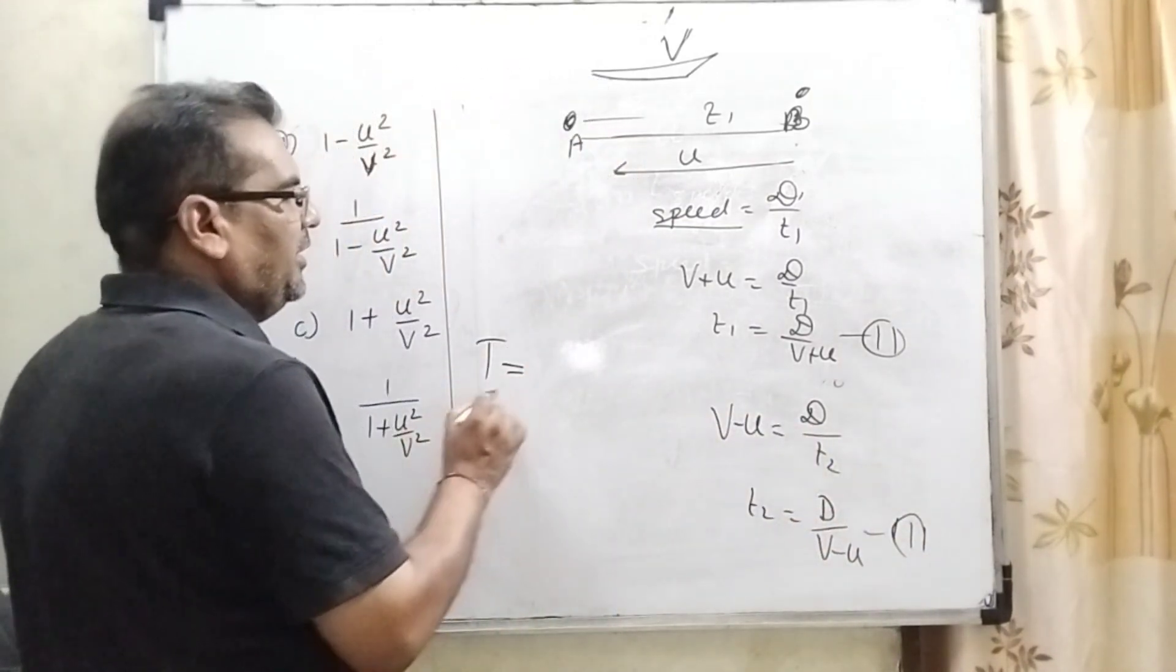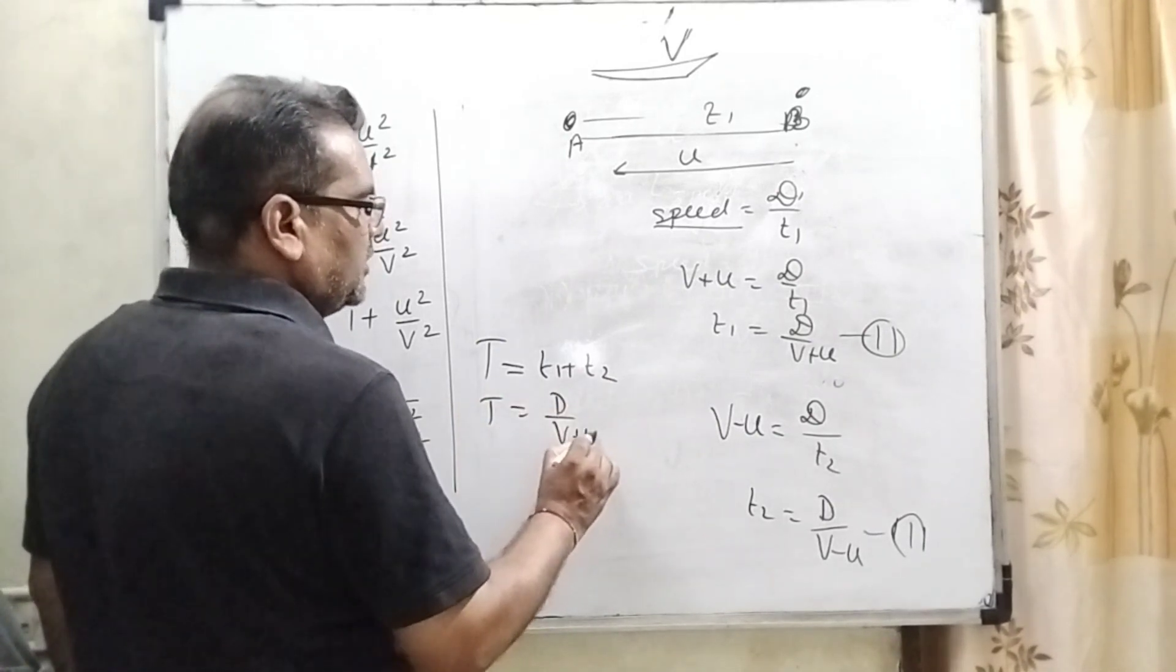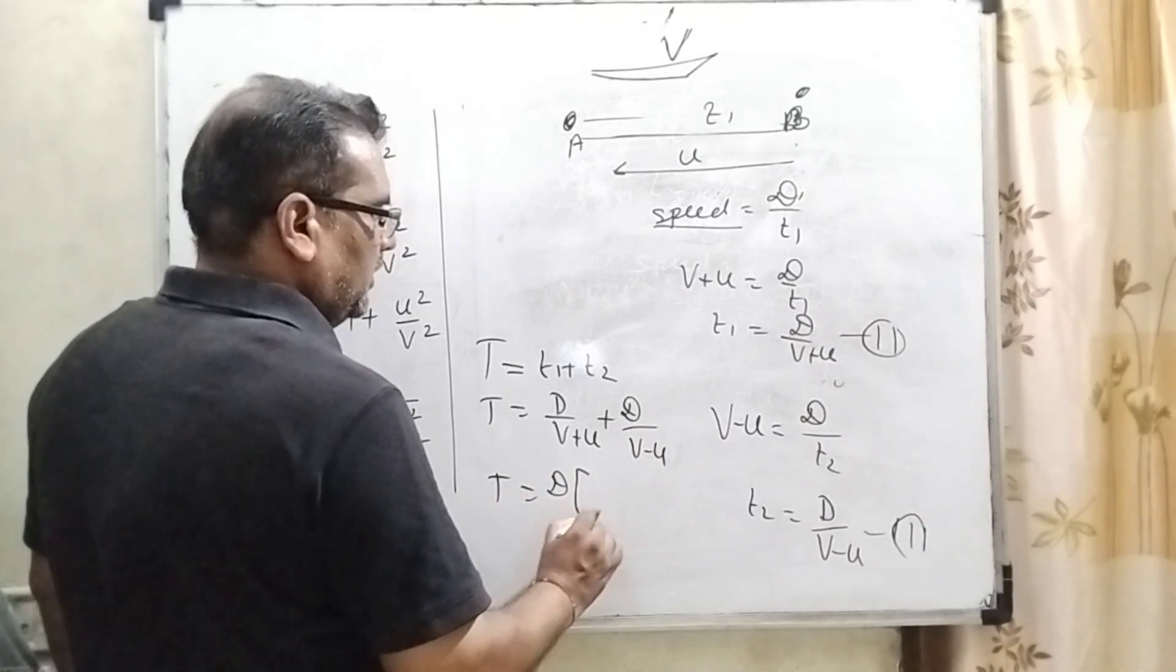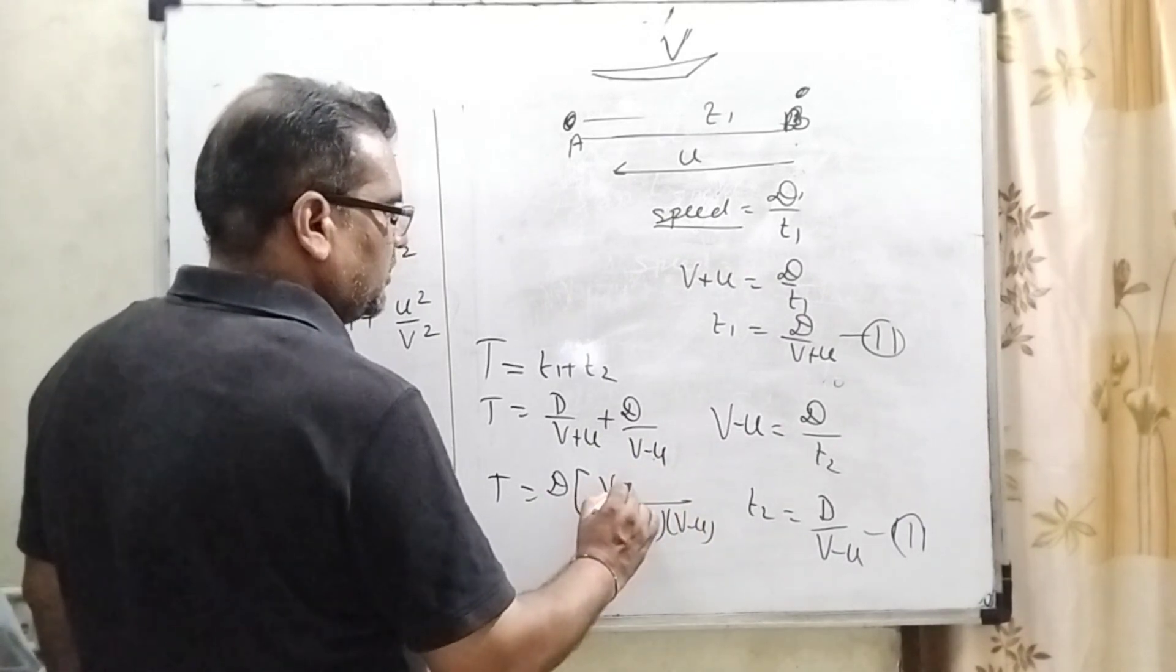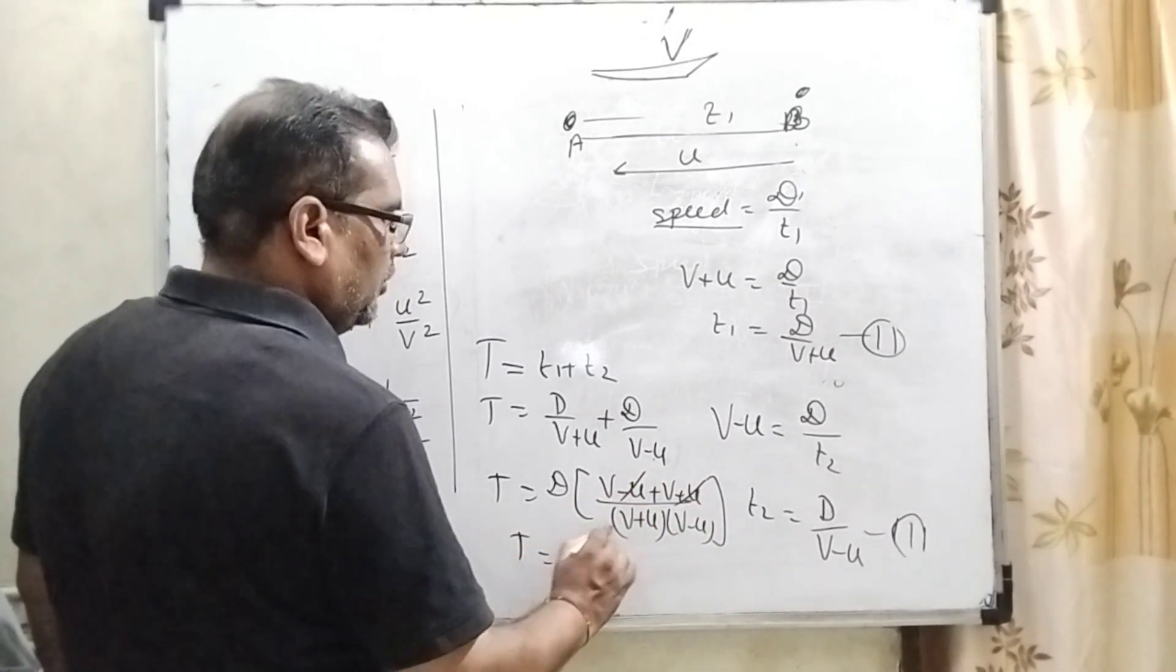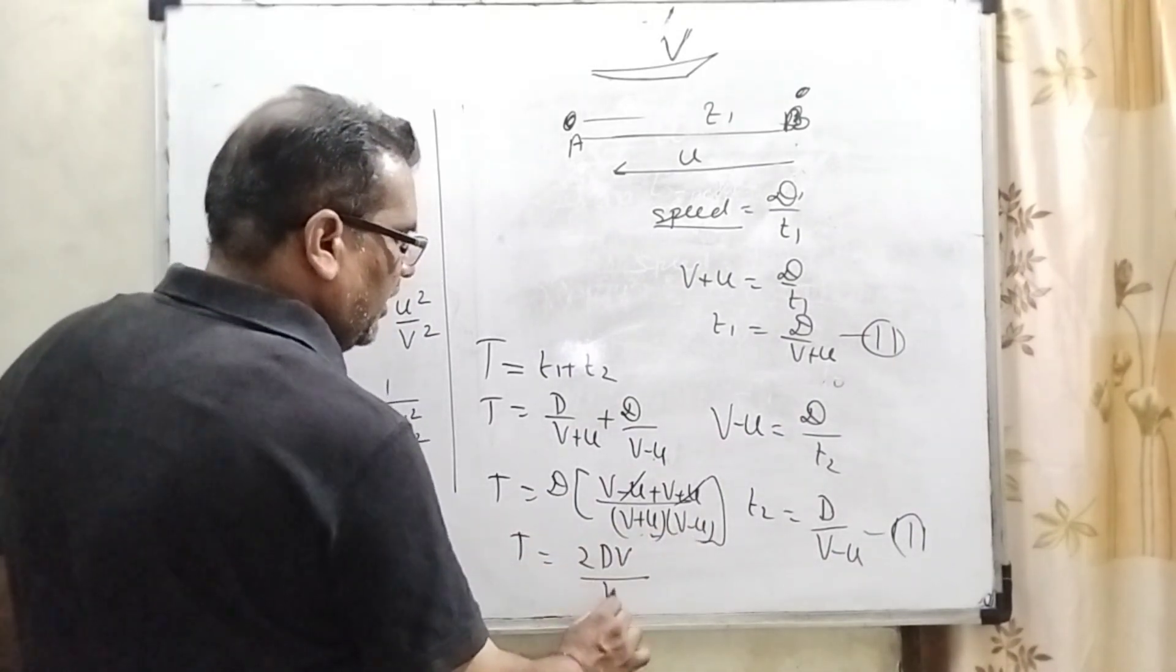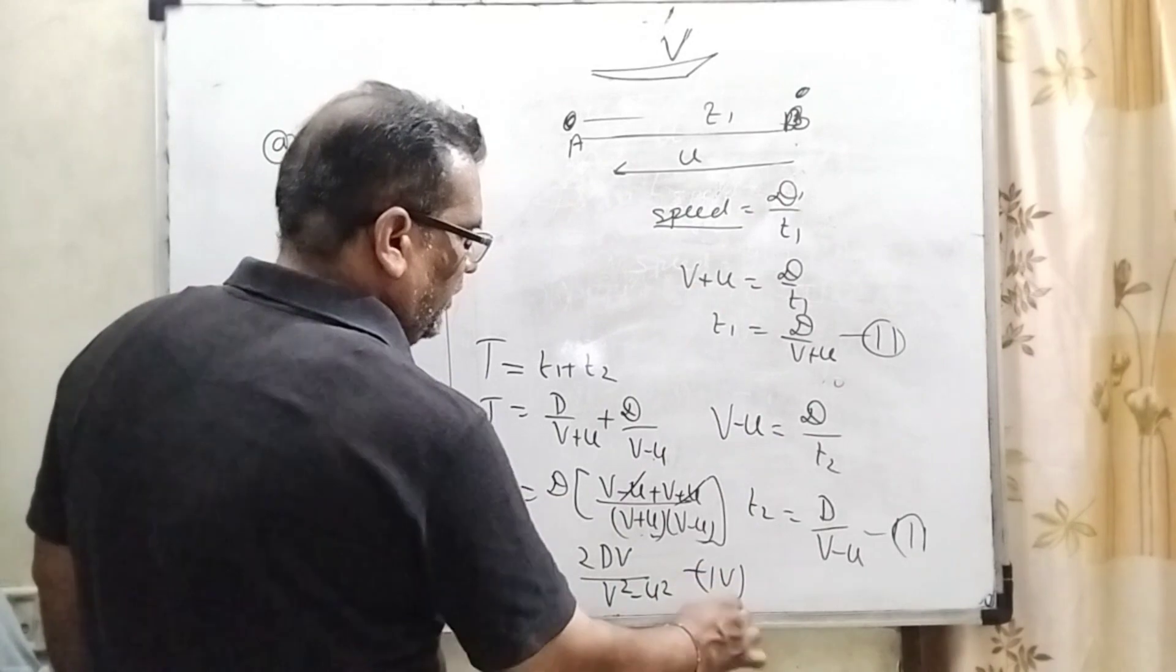Now total time is given that capital T equals T1 plus T2. Here what is the T1? D by V plus U. And here D by V minus U. Here you will get common and taking LCM V plus U and V minus U. Here V minus U plus V plus U. Then you can see that U cancel out. T equal to 2DV upon - you can see that A plus B, A minus B identity here we have using. Then it becomes V square minus U square.